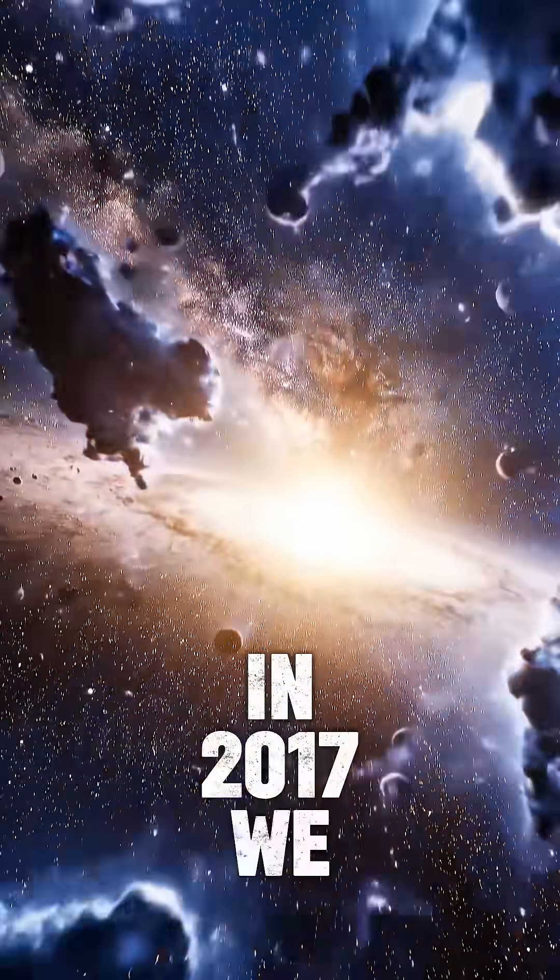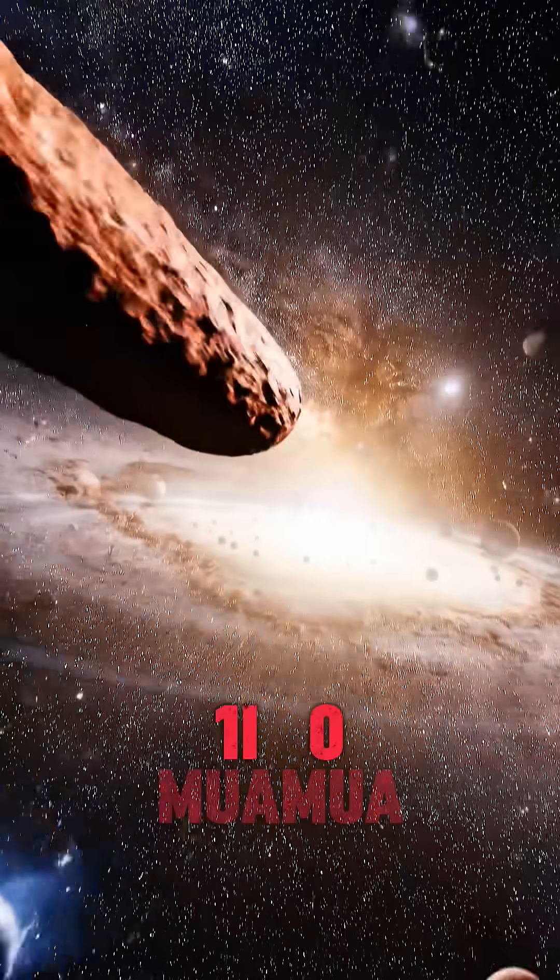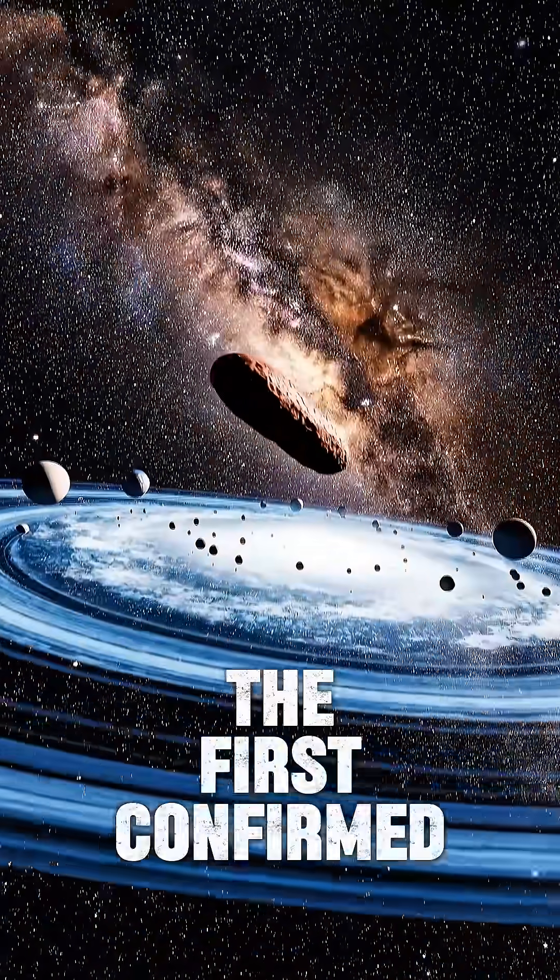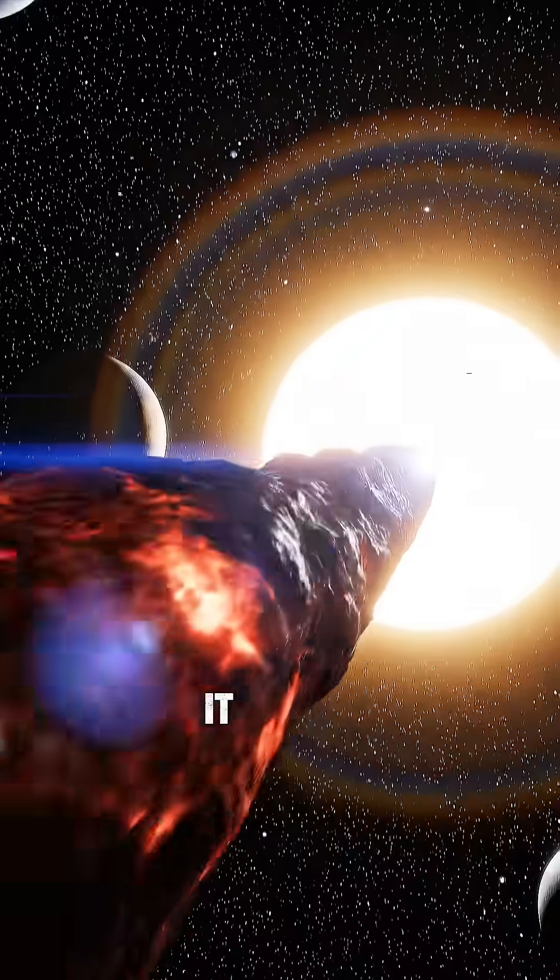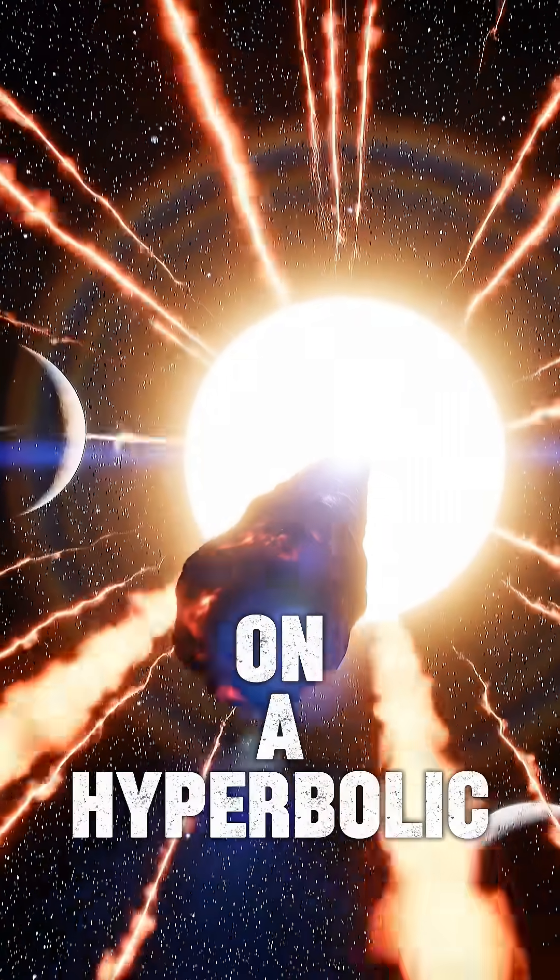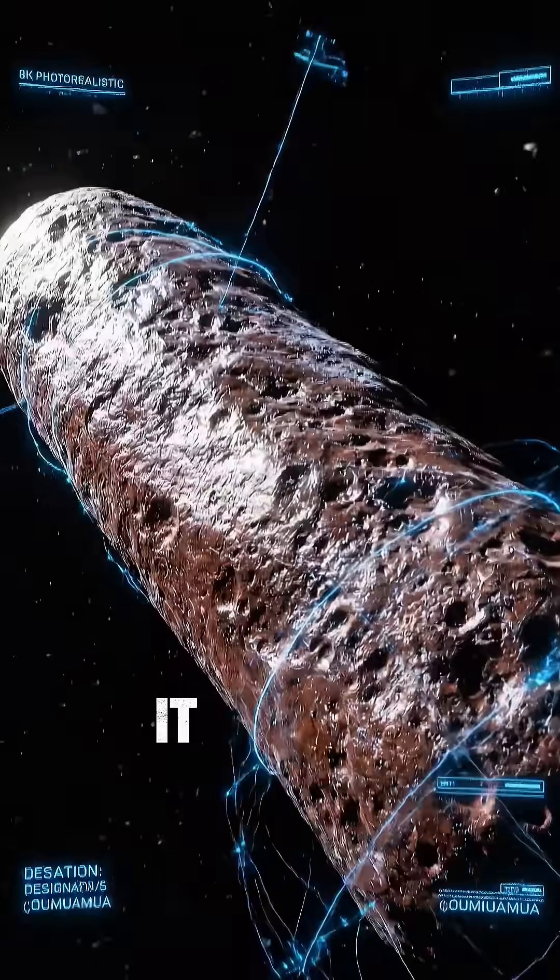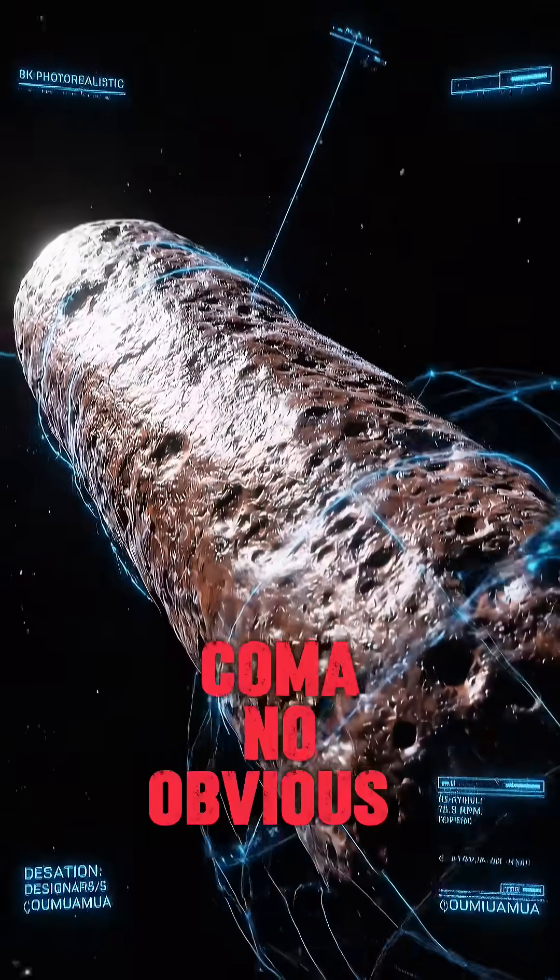In 2017 we discovered one, Oumuamua, the first confirmed interstellar object. It moved faster than anything we'd seen on a hyperbolic path out of our system. It showed no coma, no obvious outgassing.